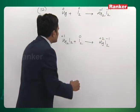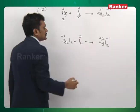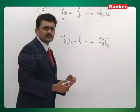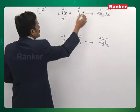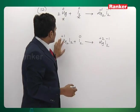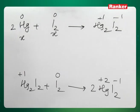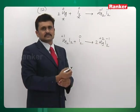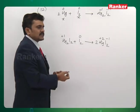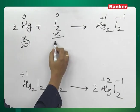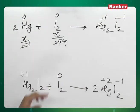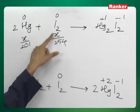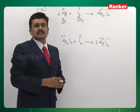Suppose x grams of mercury and x grams of iodine are taken. Balancing the equation: 2 mercury on one side requires multiplying by 2 on the product side. The atomic weight of mercury is approximately 201 and that of I is 127, giving molecular weight of I₂ as 254. Converting weights to moles: x/201 moles of Hg and x/254 moles of I₂. Iodine is assumed to be the limiting reagent in the first reaction.